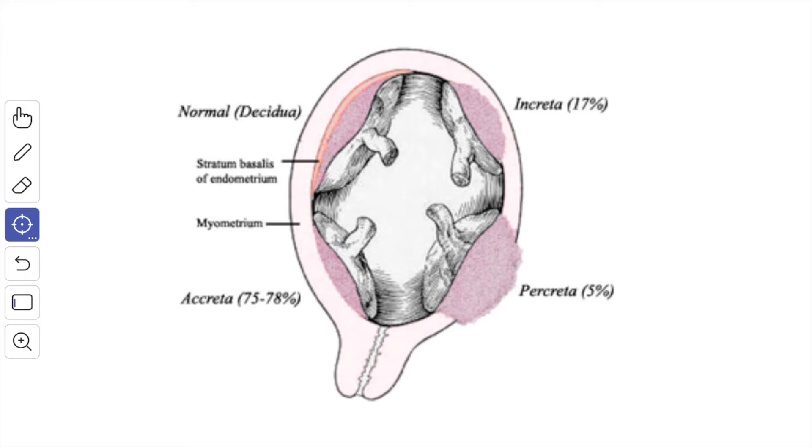According to the degree of adhesion or penetration, the placenta is classified into placenta accreta when it is adhered pathologically to the decidua basalis. Then you have the placenta increta when it penetrates the myometrium and then you have the placenta percreta when it penetrates the entire uterine wall.